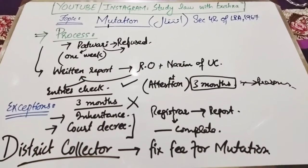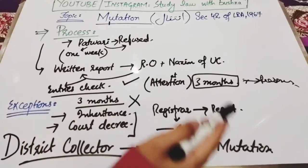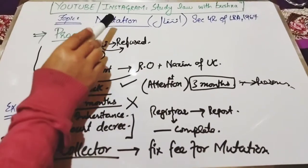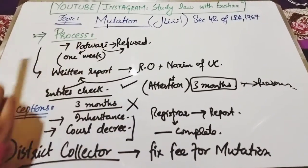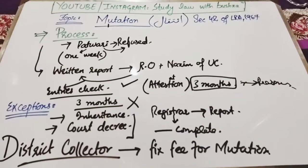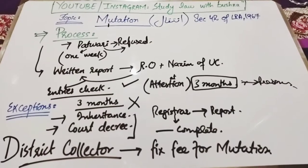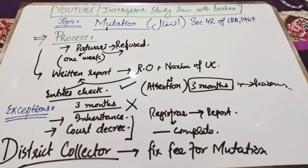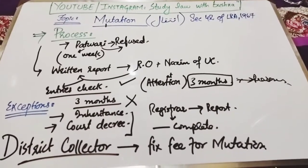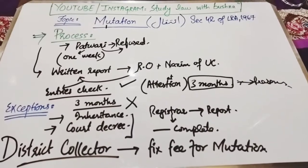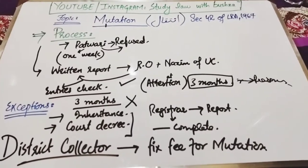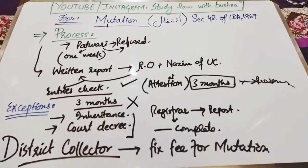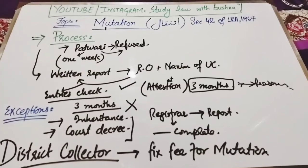That was our today's discussion on the process of mutation under section 42 of the West Pakistan Land Revenue Act 1967. I hope this topic was clear to you. If you liked this video, please like it, comment, and subscribe to the channel. Thank you so much for watching.